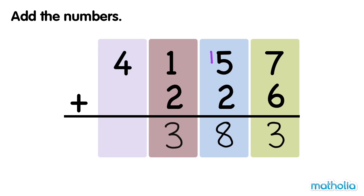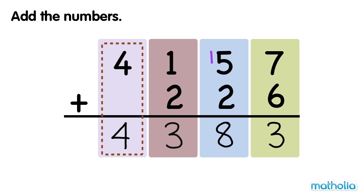Finally, we add the thousands. 4000 plus 0 is 4000. So 4157 plus 226 equals 4383.